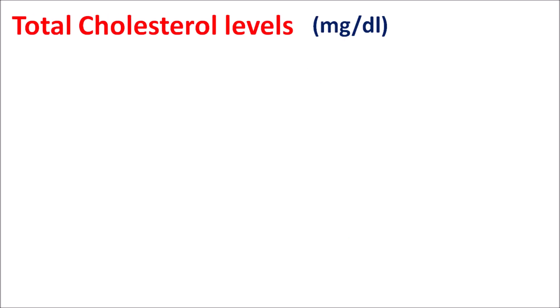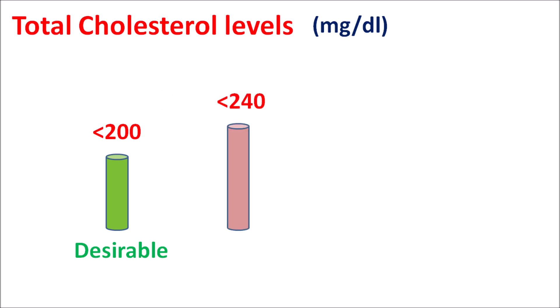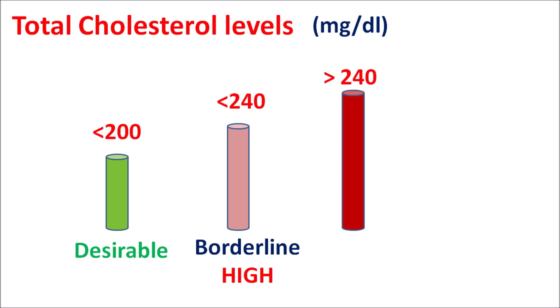For total cholesterol levels, below 200 mg/dL is considered desirable. Between 200 to 240 is borderline high, and greater than 240 is considered high. In such conditions, diet control, exercise, and lipid-lowering drugs such as statins and fibrates can bring total cholesterol below 200 to minimize the risk of coronary heart disease.